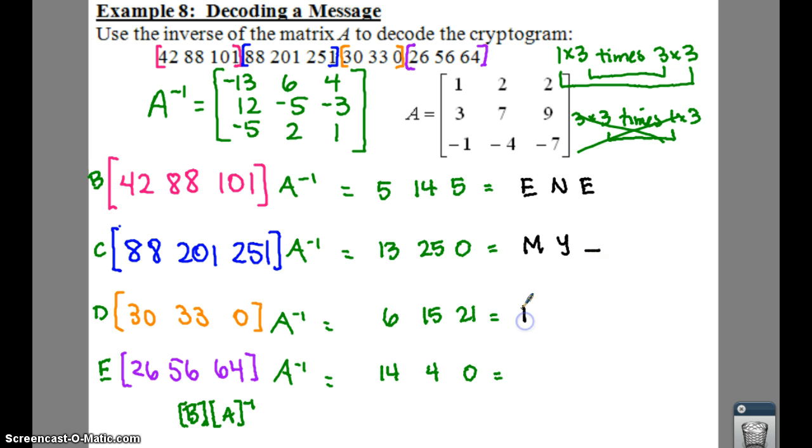6 is F, like some of your grades. 15 is O. Sorry, I didn't mean to say that out loud. 21 is a U. 14 is N. Once again, we have D. And 0, we have 0. So all together now, we see enemy found.